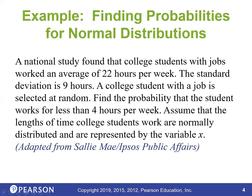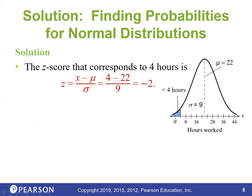Let's work through this. We have to figure out the Z-score corresponding to 4 hours. As long as we get a Z-score, we can look at our table. The Z-score that corresponds to 4 hours is: Z = (4 − 22) / 9, which nicely turns out to be a Z-score of negative 2.